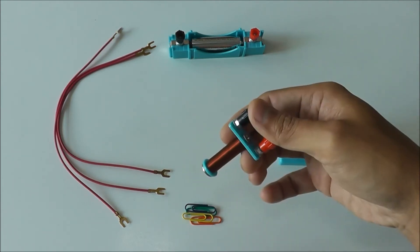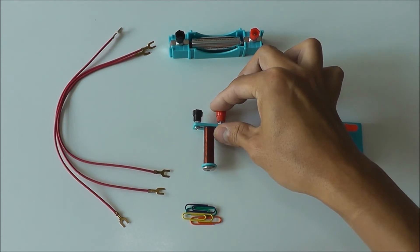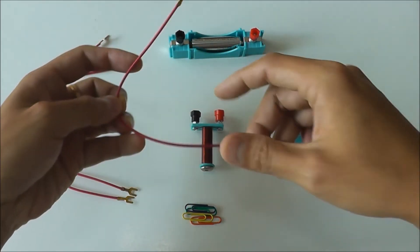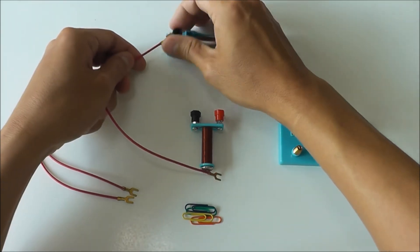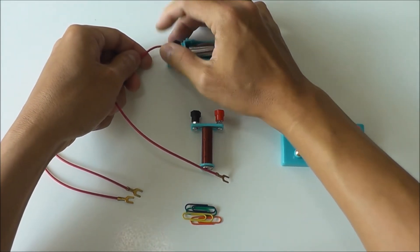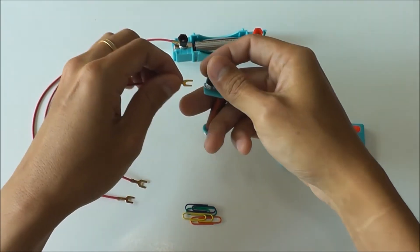So I need to magnetize it using electricity. What I need to do is connect it in a series connection. I'll start off with the battery, then connect it to one end of the electromagnet.